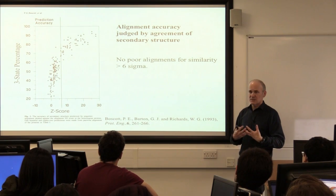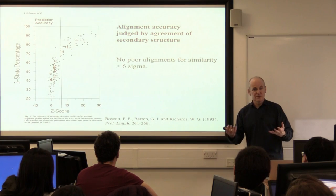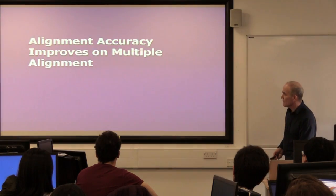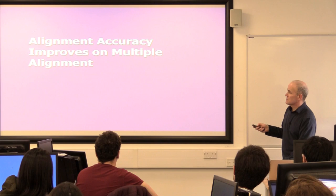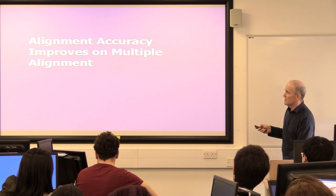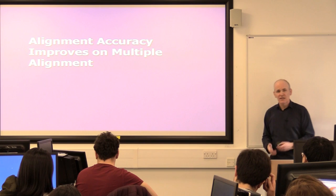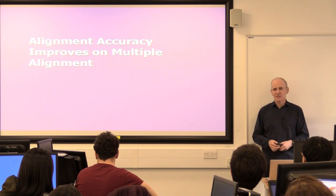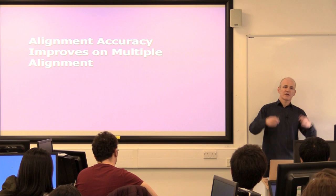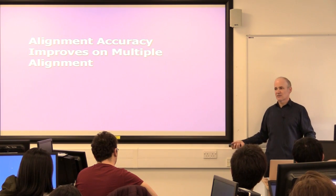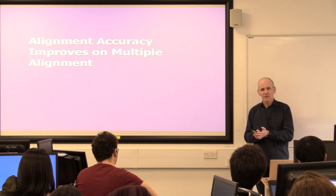As the sequences become more similar, you've got more confidence in the alignment. The other thing to point out is that alignment accuracy improves with multiple sequence alignment. So even if you're only interested in comparing, say, E. coli to human, include all the other related sequences you can get your hands on as well, because in general the accuracy of the alignment will go up.